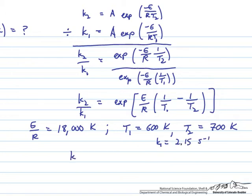k1 is 2.15 reciprocal seconds. If we plug all that in we can solve for k2 at 700 Kelvin, and I get approximately 160 reciprocal seconds. So an increase of about 2 orders of magnitude when we increase the temperature by 100 Kelvin at that activation energy.